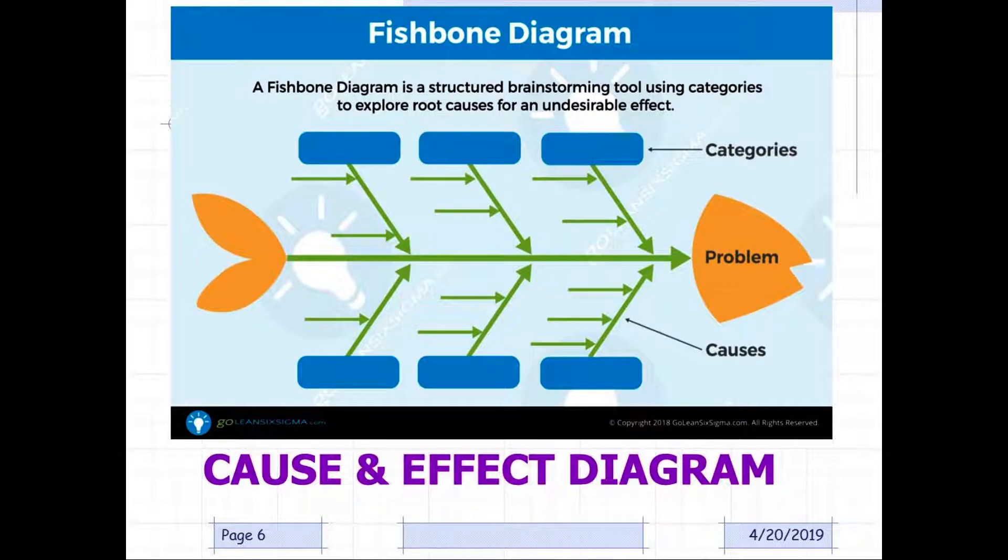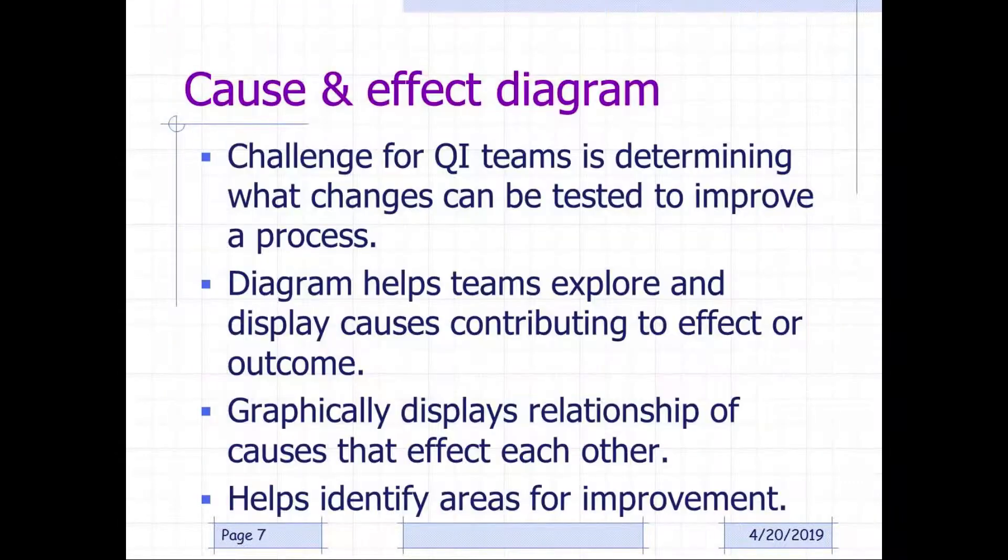Here's what a fishbone cause and effect diagram looks like. It's a structured brainstorming tool using categories to explore root causes for an undesirable effect. A cause and effect diagram is a challenge for QI teams to determine what changes can be tested to improve a process. A diagram helps teams explore and display causes contributing to an effect or outcome. It graphically displays the relationships of causes that affect each other and helps identify areas for improvement.